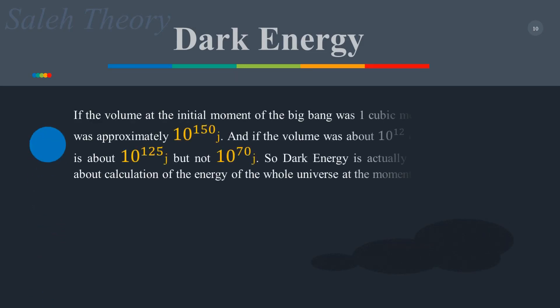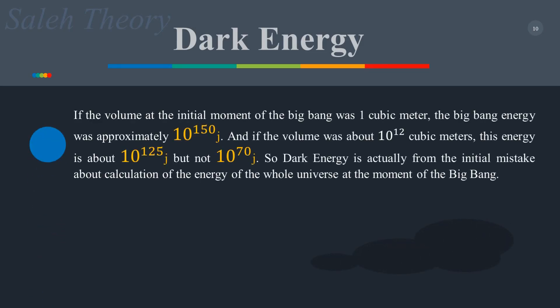If the volume at the initial moment of the Big Bang was one cubic meter, the Big Bang energy was approximately 10 to the power of 150 joules. And if the volume was about 10 to the power of 12 cubic meters, this energy is about 10 to the power of 125 joules — but not 10 to the power of 70 joules. So dark energy actually arises from an initial mistake in the calculation of the energy of the whole universe.